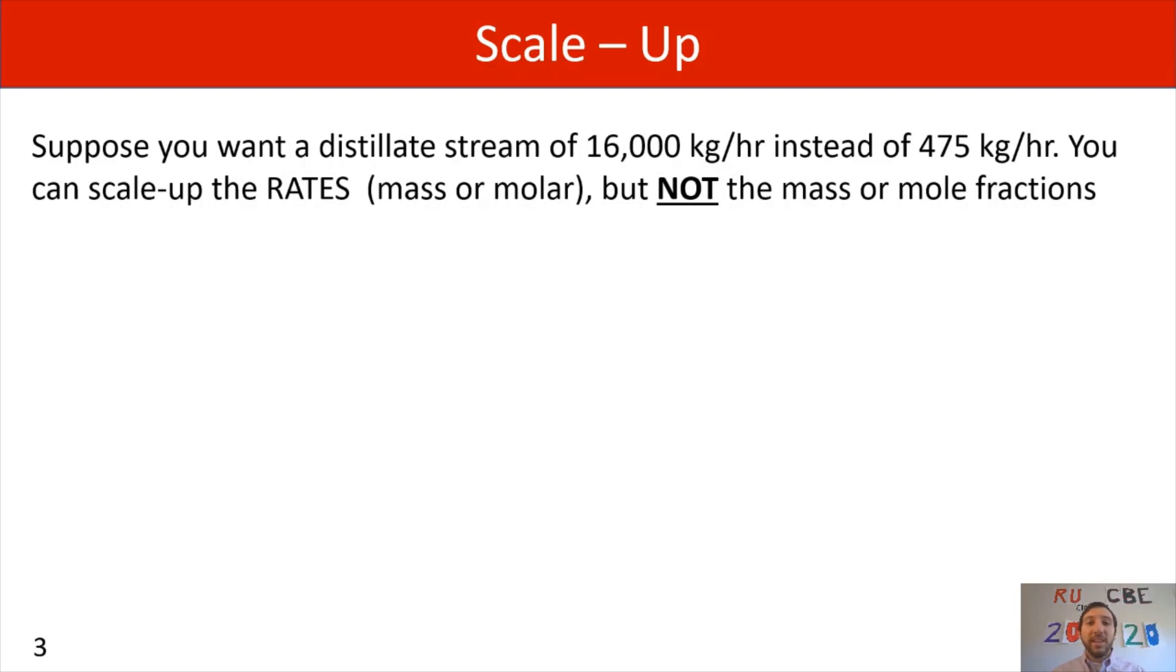So for us, with our scale-up, we're going to say that our scale-up is going to equal our desired flow rate divided by our actual flow rate. So for this example, we want a distillate stream, so that would be stream 2 with the majority of benzene. We want that to have a flow rate of 16,000 kilograms per hour. So our desired flow rate is 16,000. Our actual flow rate is 475 kilograms per hour. So if we substitute those values in, we will see that our scale-up factor is going to be 33.68.